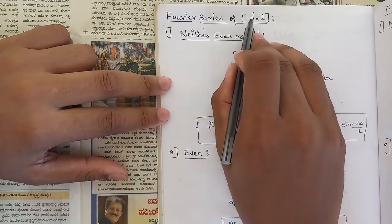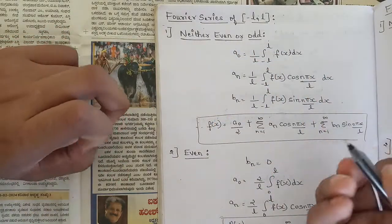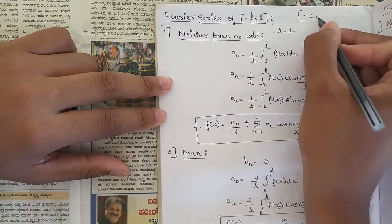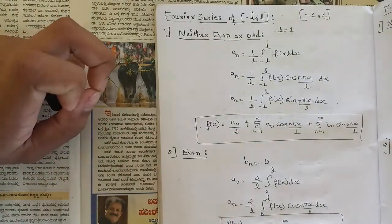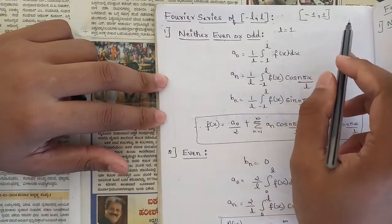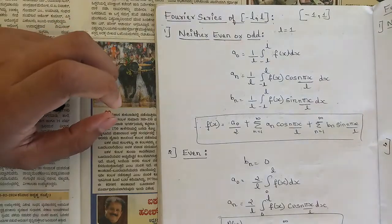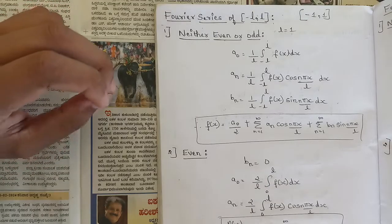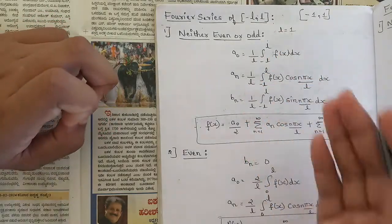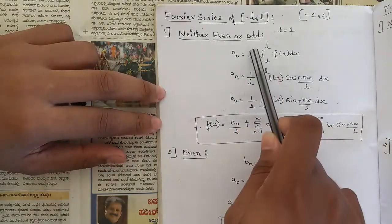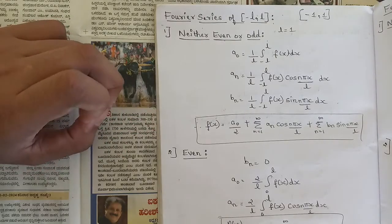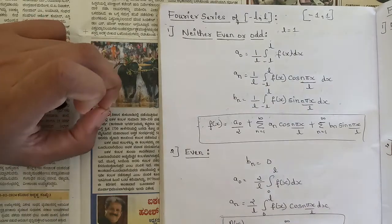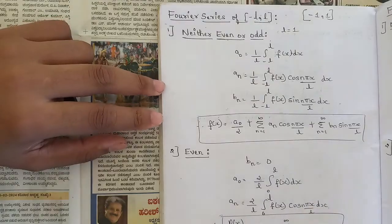For the interval minus l to l, l can be any constant number from 1 to infinity. The same three cases follow: neither even nor odd, even, and odd. There are slight changes in the Fourier coefficient formulas. For a-naught, in the case of minus pi to pi it was one over pi; here we simply replace pi by l, so it becomes one over l. That is the only change — all other things remain the same in the case of minus l to l.